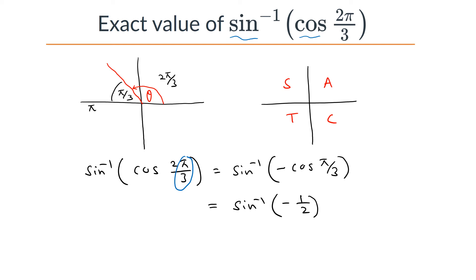Since sine inverse is an odd function, we can pull the negative out: −sine⁻¹(1/2). We know that sine⁻¹(1/2) = π/6, so the exact value of sine⁻¹(cosine(2π/3)) is −π/6.